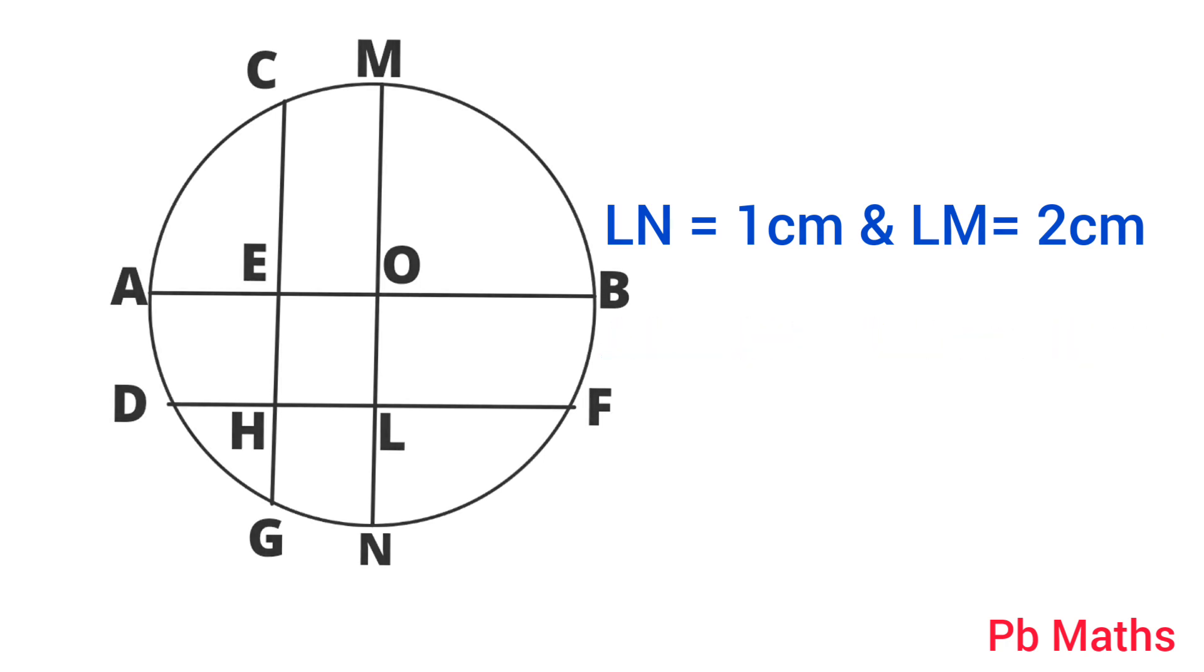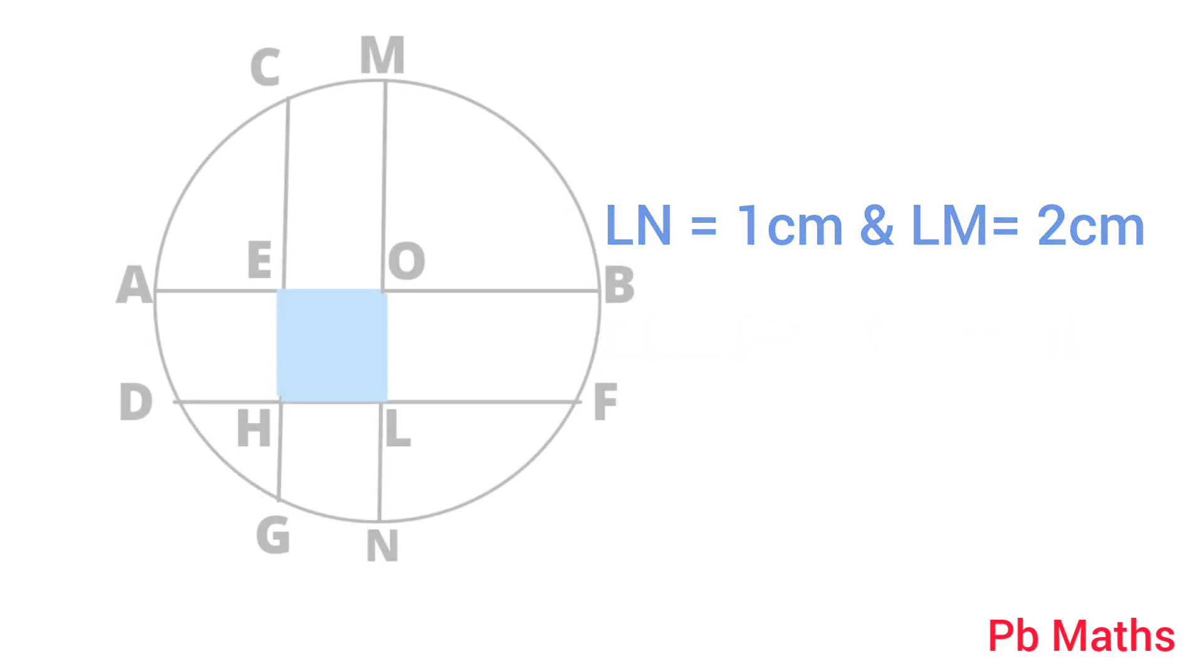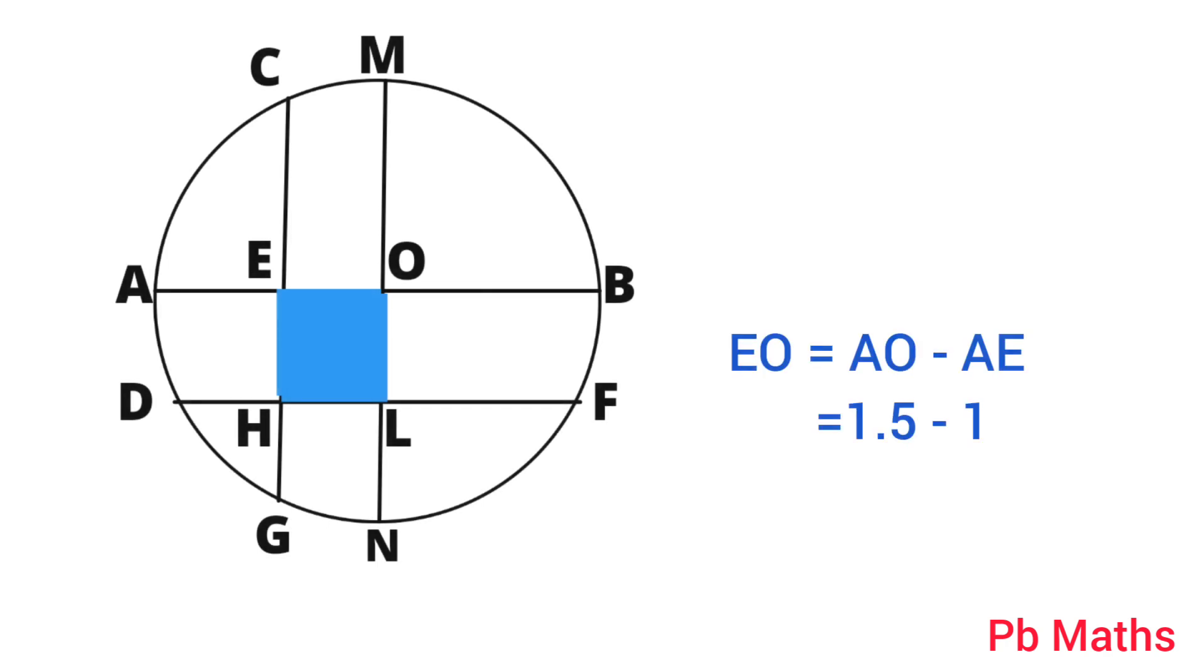Now, let's calculate EO. EO equals AO minus AE. The length of AO is 1.5 cm minus the length of AE equals 1. So, the length of EO equals 0.5 cm or 1/2 cm.